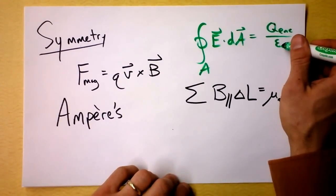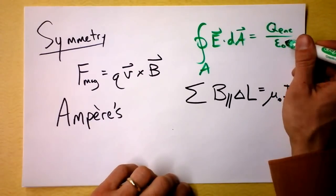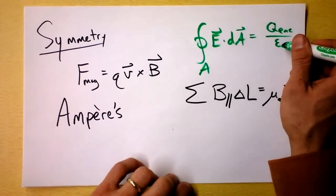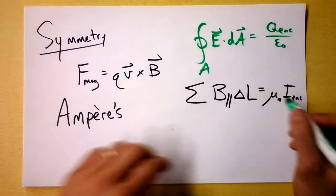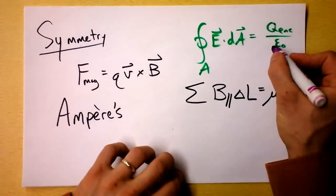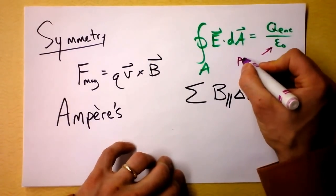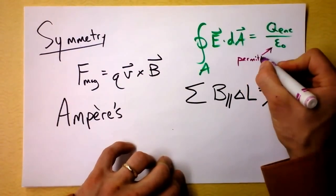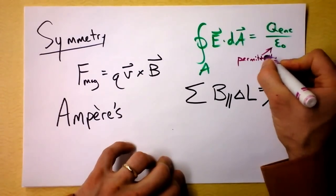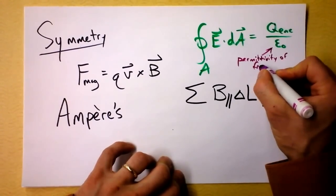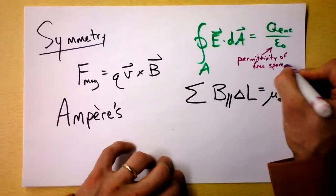This is the permeability of free space. No, sorry, this is the permittivity of free space. This is the permeability of free space. I guess I should label those since I have even gotten myself confused on that. Permittivity of free space. That's the naught part. The free space is the naught.